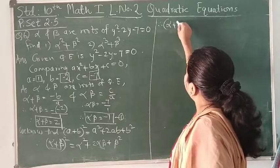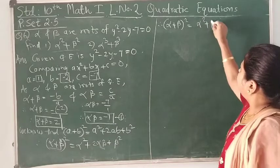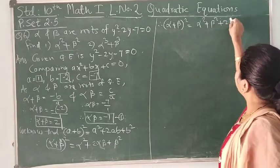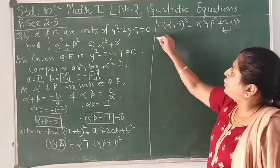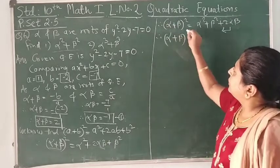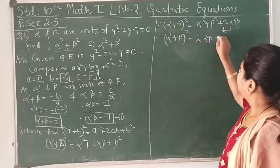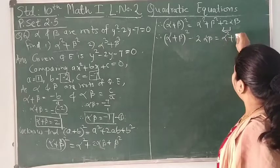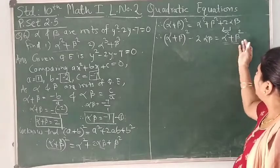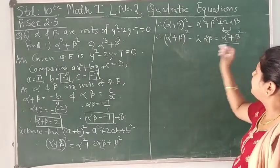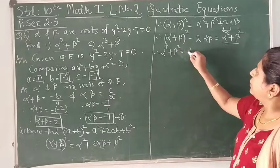Writing it out: (α + β)² = α² + β² + 2αβ. Moving 2αβ to the left side, we get α² + β² = (α + β)² - 2αβ.